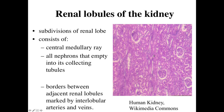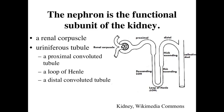The nephron is going to be the functional subunit of the kidney, repeated over and over again throughout the kidney. You're going to have the renal corpuscle with an afferent arteriole bringing blood in, the glomerular capillary bed, and an efferent arteriole carrying blood out. The urinary space enclosed within Bowman's capsule directs the raw filtrate — raw urine — into the uriniferous tubule. The uriniferous tubule is composed of the proximal convoluted tubule in the cortex, the loop of Henle going down into the medulla, and the distal convoluted tubule. Collecting tubules and collecting ducts are not part of the nephron.